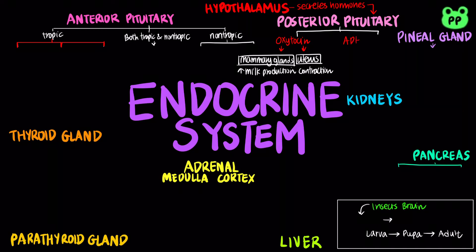The posterior pituitary releases another hormone known as ADH, antidiuretic hormone, or vasopressin, which regulates social behavior and increases water reabsorption in the kidneys, which decreases blood osmolarity.